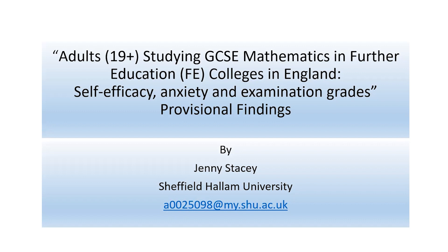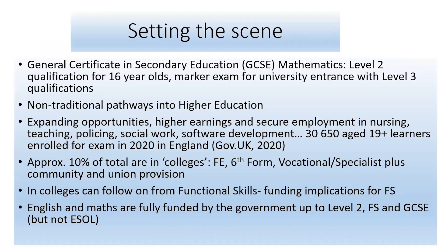You're seeing the findings before I've finished writing them up and before I've had my viva. GCSE Mathematics is a level-two qualification, normally taken in secondary schools by 16-year-olds, but it's a marker examination in the UK for university entrance. People wanting to go into university to study nursing, teaching, or anything else are normally expected to have this mathematics pass alongside English. These 19-plus learners are adults coming back into education on non-traditional pathways into higher education — many want to go on to nursing, social work, or become a teaching assistant or teacher.